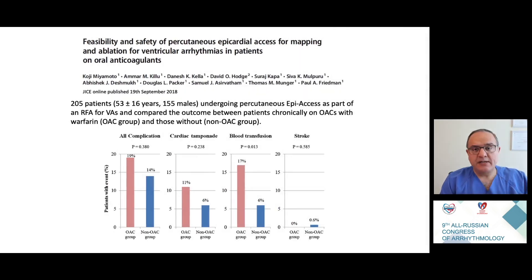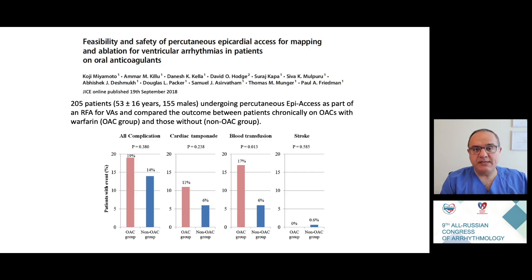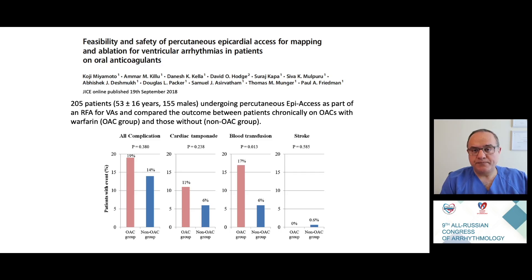The next question is whether to perform the procedure on or off anticoagulation. A study of 205 patients undergoing percutaneous epicardial access and ablation showed a trend that performing ablation on anticoagulation increases the risk of bleeding or transfusion, but there is no difference in the risk of stroke. Therefore we usually prefer to perform epicardial ablation with an INR below two, though in patients with a mechanical valve we prefer to proceed on anticoagulation using either the interventional or surgical window approach.